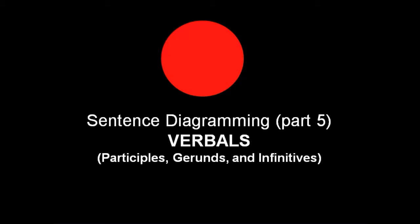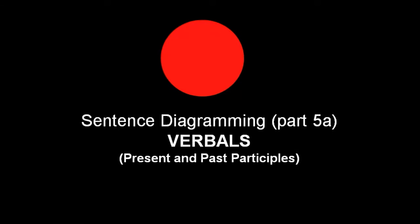In this fifth video on sentence diagramming, we're going to talk about verb forms which we call verbals — which look like verbs but don't act like verbs. There are three main types: participles, gerunds, and infinitives.